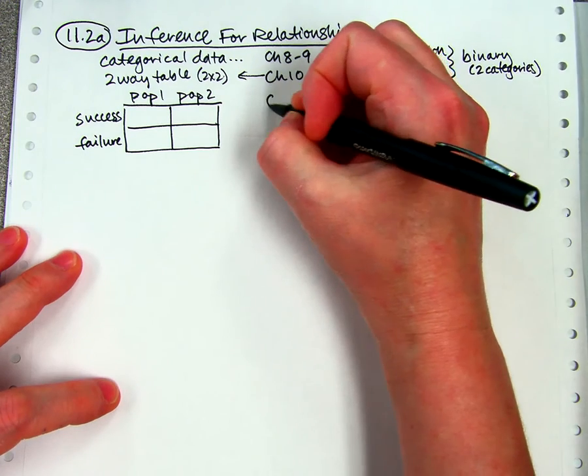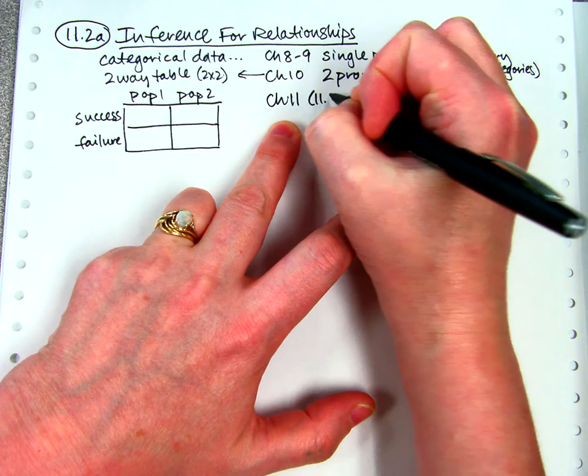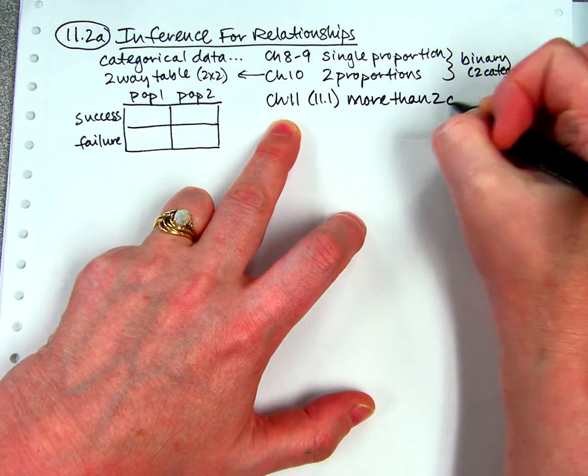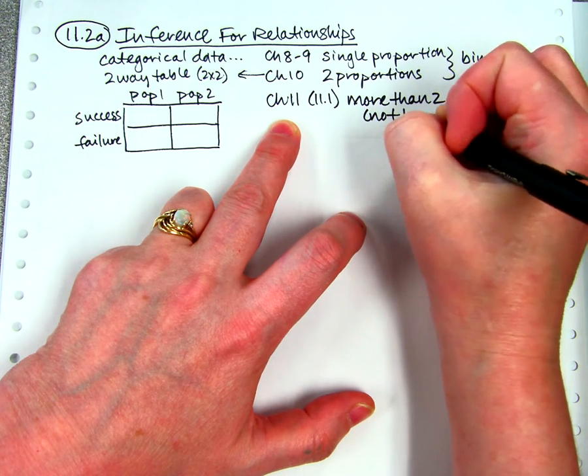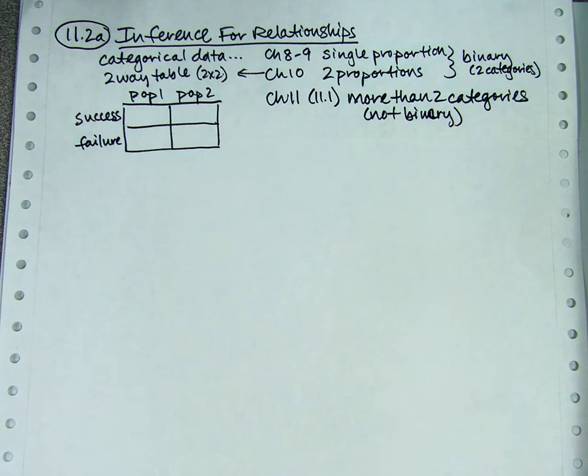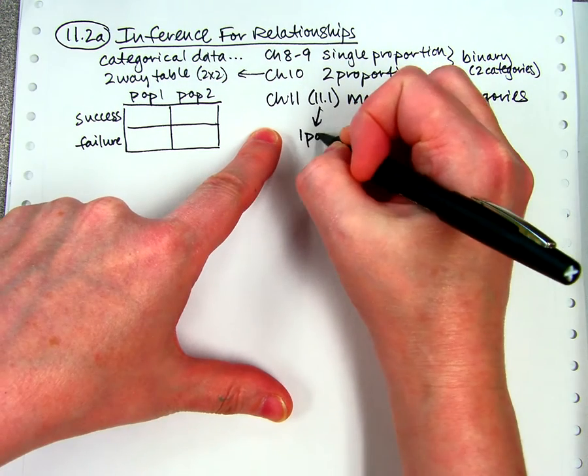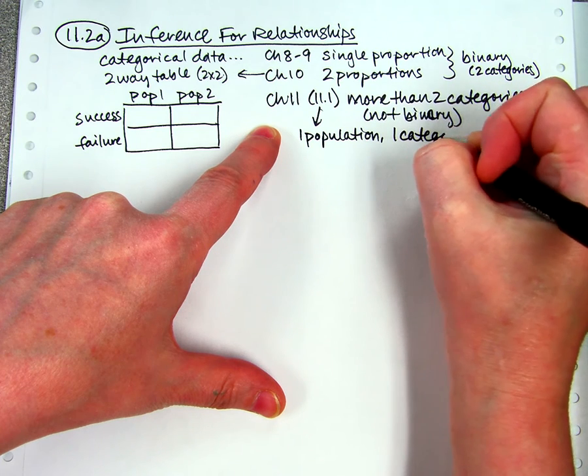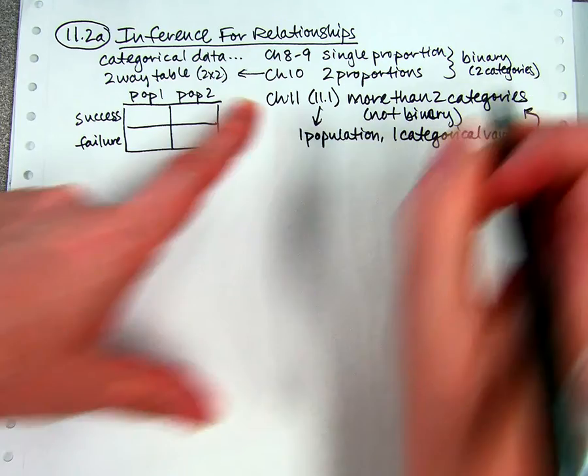Chapter 11 is where we expand to do more than two categories. Specifically, I'm talking about 11-1, where we had many categories. In other words, we're non-binary anymore. We're allowing more categories. And that's kind of fun. Except in 11-1, we still only had one population. One population, one categorical variable. That was 11-1. And that categorical variable just could have more than two categories.